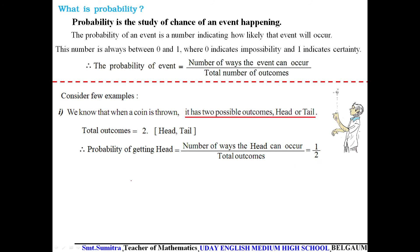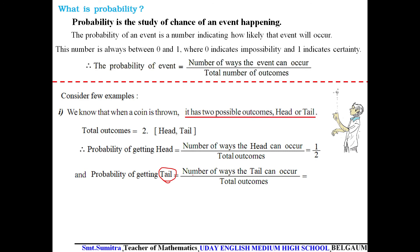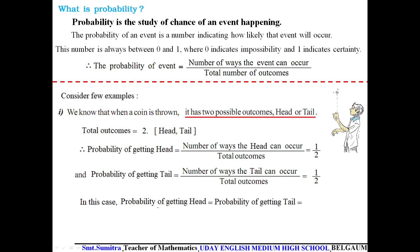Similarly, P(tail) = number of ways tail can occur divided by total number of outcomes = 1 divided by 2. So in this case, P(head) = P(tail) = 1/2. Both are equal.